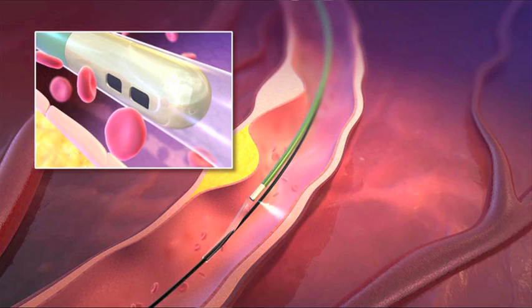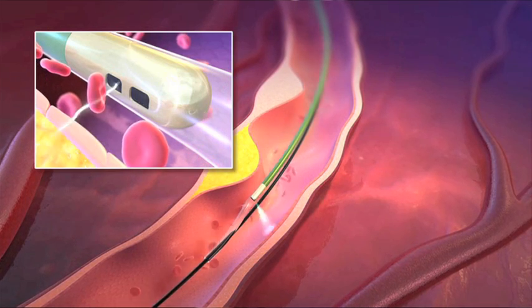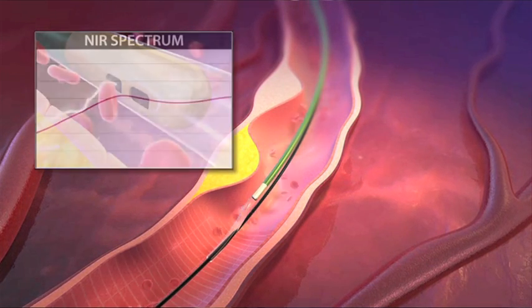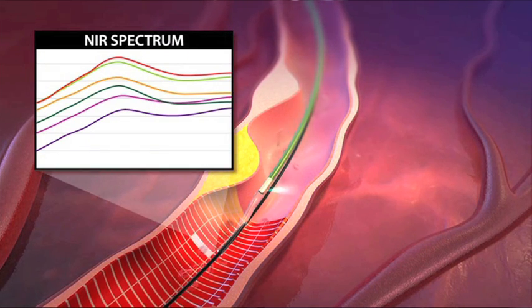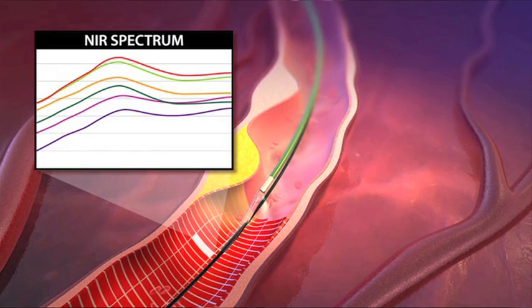Any patient undergoing a cardiac catheterization is a candidate for Lipiscan. The device works by a tiny camera being placed in the coronary artery. This specialized camera uses near-infrared spectroscopy which reflects a light in the coronary artery.